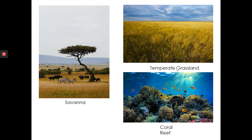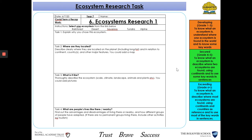Let's have a look at the task to complete this week. For this task, we're asking you to create a fact file on a particular ecosystem. We've got a list: rainforest, desert, savannah, tundra, alpine, or you can use any of the other ecosystems mentioned in today's lesson. Task one is to explain why you've chosen this ecosystem — it could be because you want to research more information on it, or because it's your favourite ecosystem.